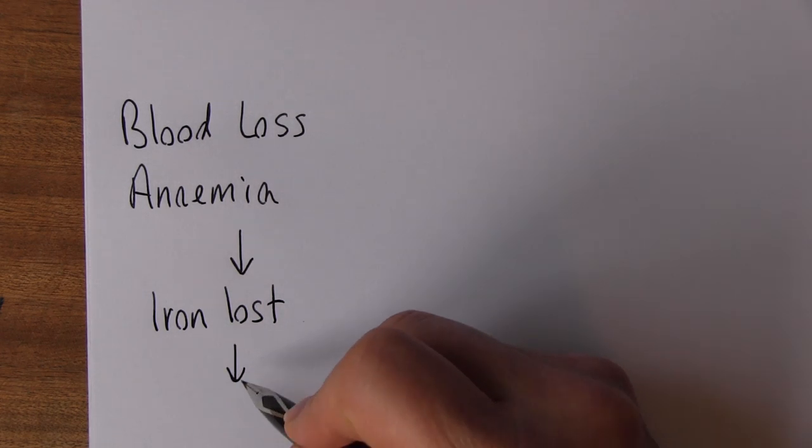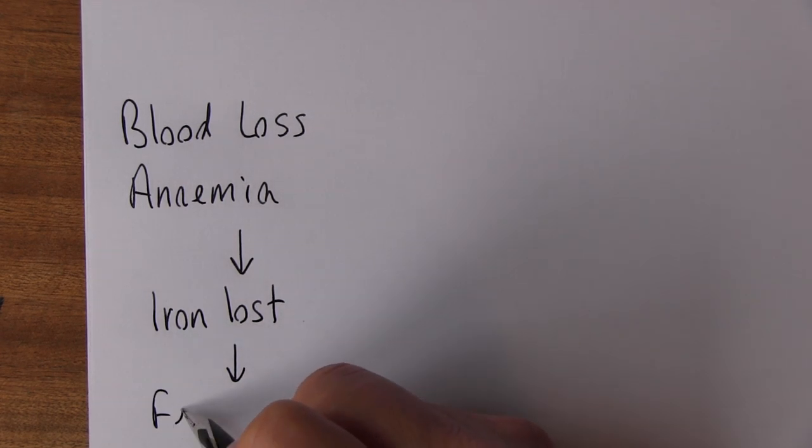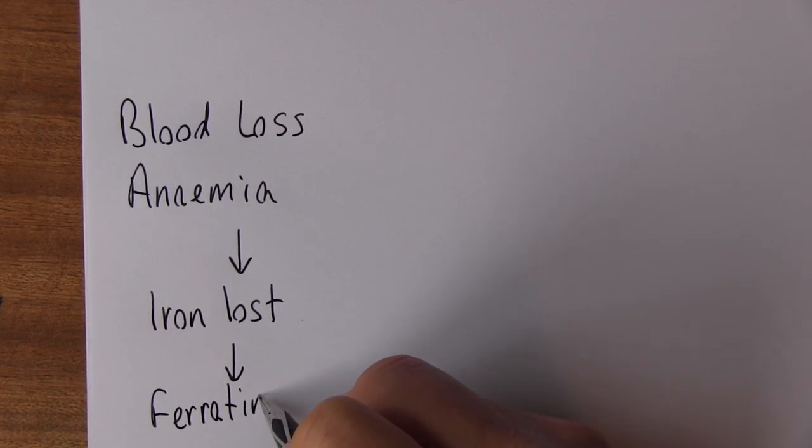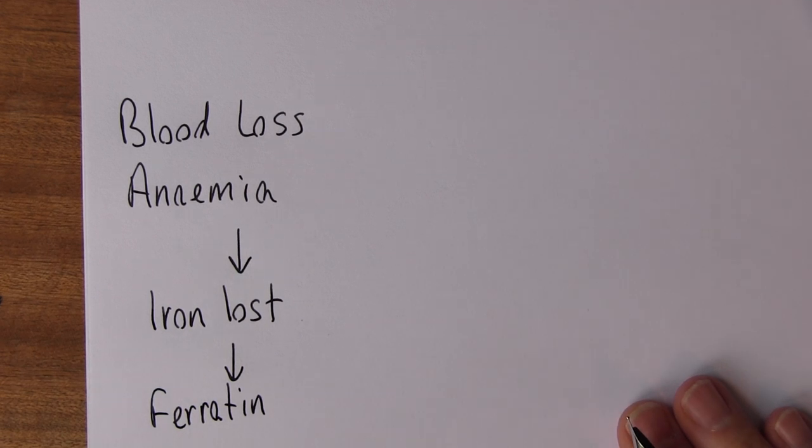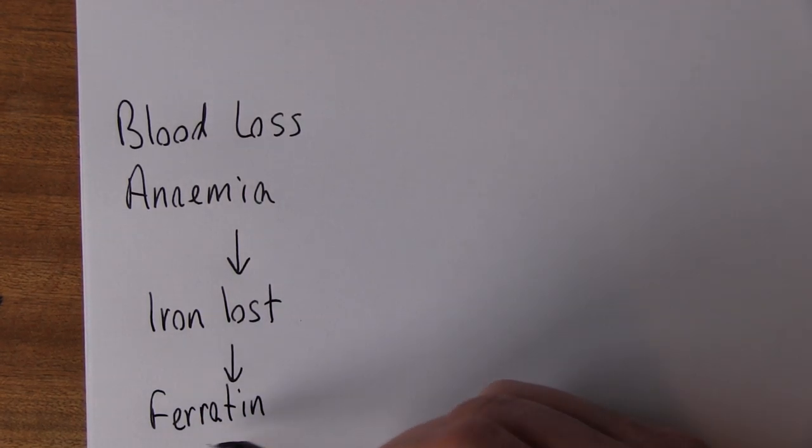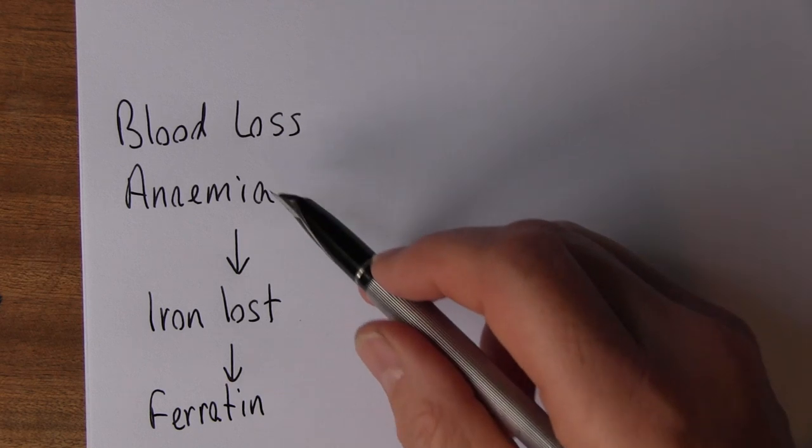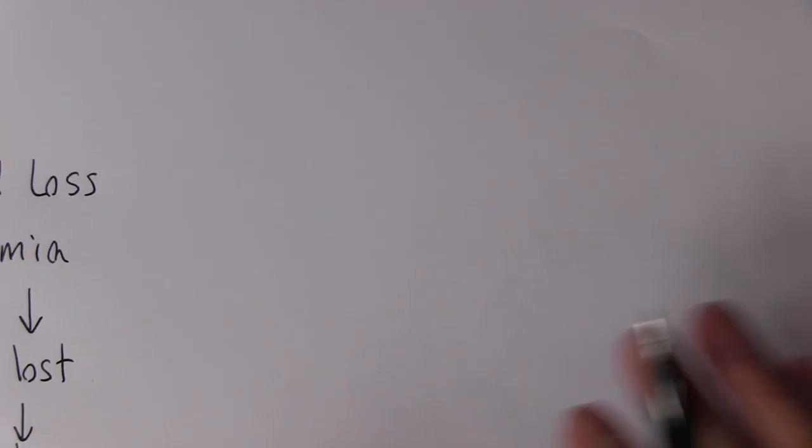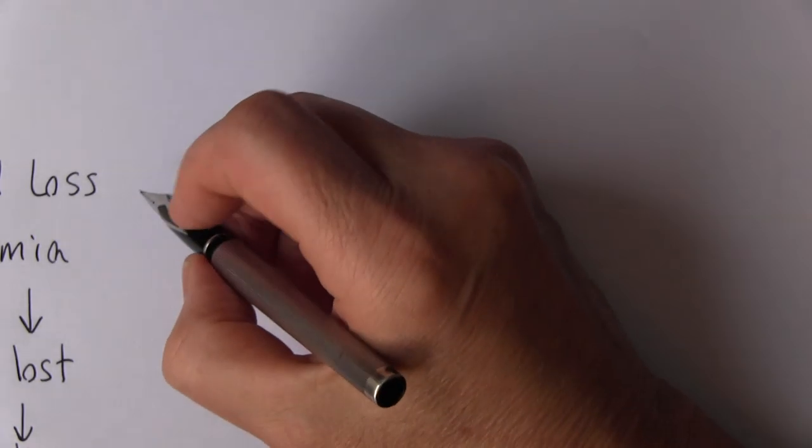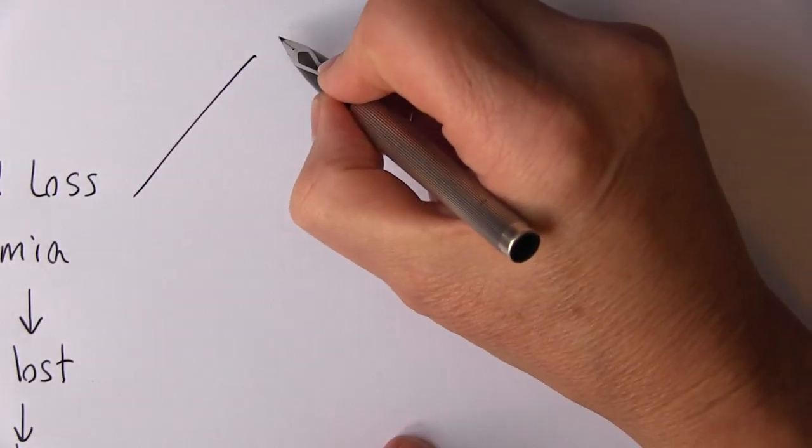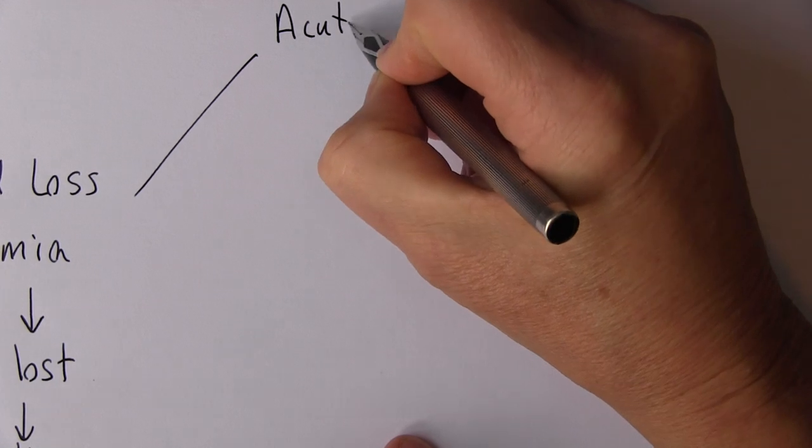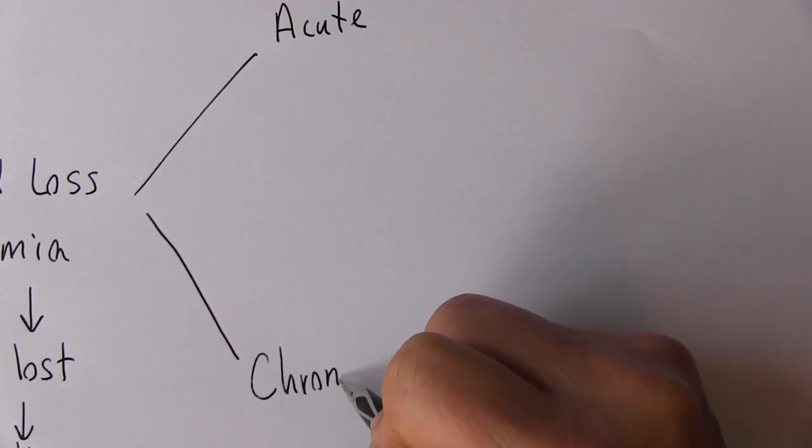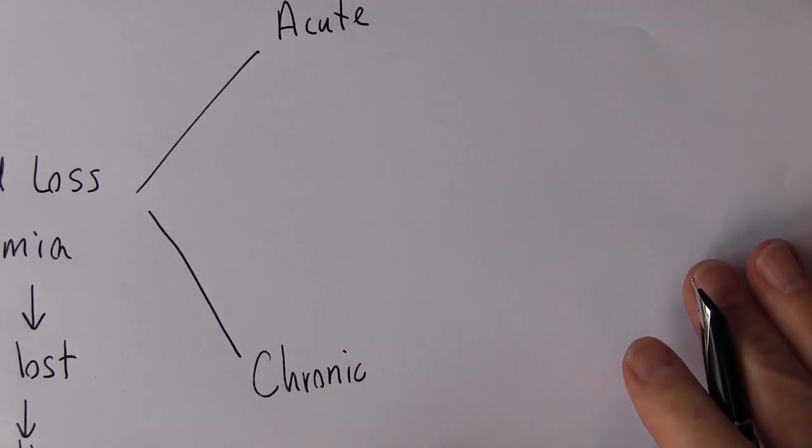Body iron is depleted over time, and particularly we can test for ferritin. Ferritin is the molecule that stores iron in the body, and these levels will become depleted in blood loss anemia, especially the chronic form. Now blood loss anemia we can divide it into the acute and we can divide it into chronic.